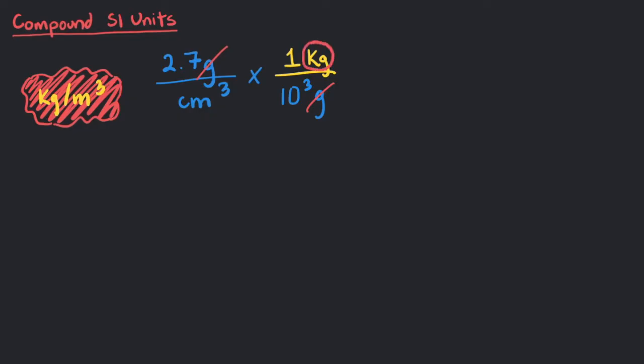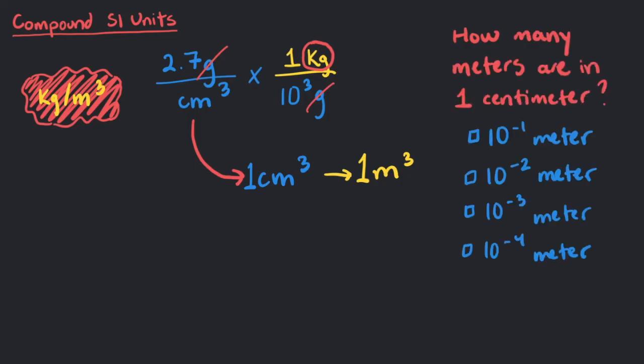Okay, now let's switch over to converting the cubic centimeters from the given number. To change 1 cubic centimeter to 1 cubic meter, we need to know how many meters are 1 centimeter. Every centimeter equals 10 to the negative 2 meters. Now, for volume, we multiply the same unit 3 times, 1 for each dimension. In the same way, we will multiply this conversion factor by itself 3 times. So, 1 centimeter times 1 centimeter times 1 centimeter equals 1 cubic centimeter.